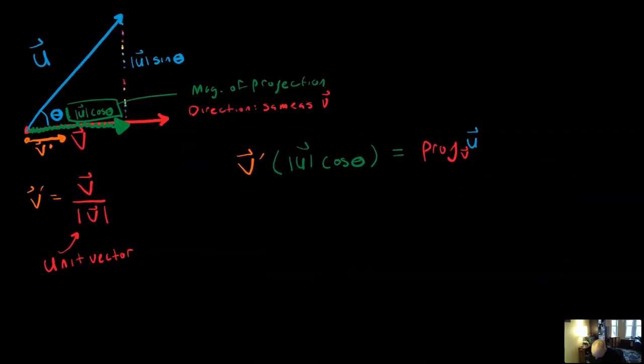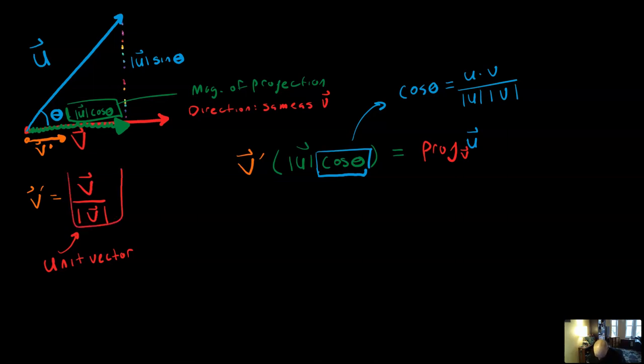So now I'm going to take that formula and shake it around a little bit. Remember that cosine theta actually is part of the dot product formula? Remember the dot product formula says cosine theta is equal to U dot V over magnitude of U, magnitude of V. So I'm going to substitute that in right here. I'm also going to substitute in V prime for this V prime, that version. So I'm going to have vector V divided by magnitude of vector V times the magnitude of vector U times the quantity U dot V divided by the magnitude of vector U times the magnitude of vector V. And that's all going to equal the projection of U onto V.